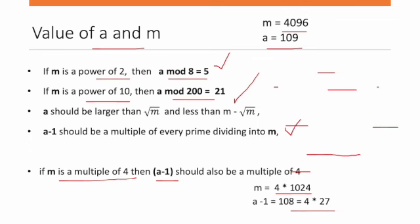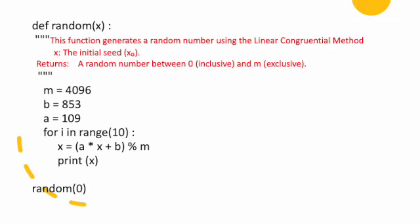With these values, we can generate pseudo-random numbers. So we are assigning m = 4096, b = 853, a = 109. Then in a for loop to generate 10 random numbers: for i in range(10), x = (a × x + b) mod m.